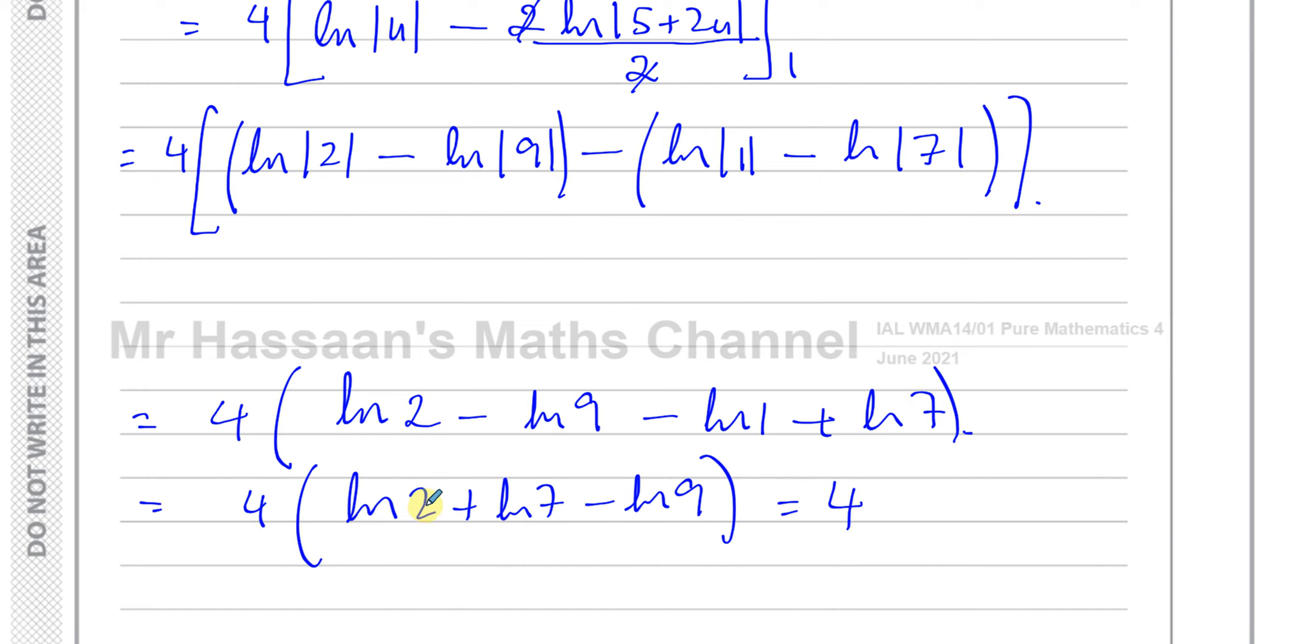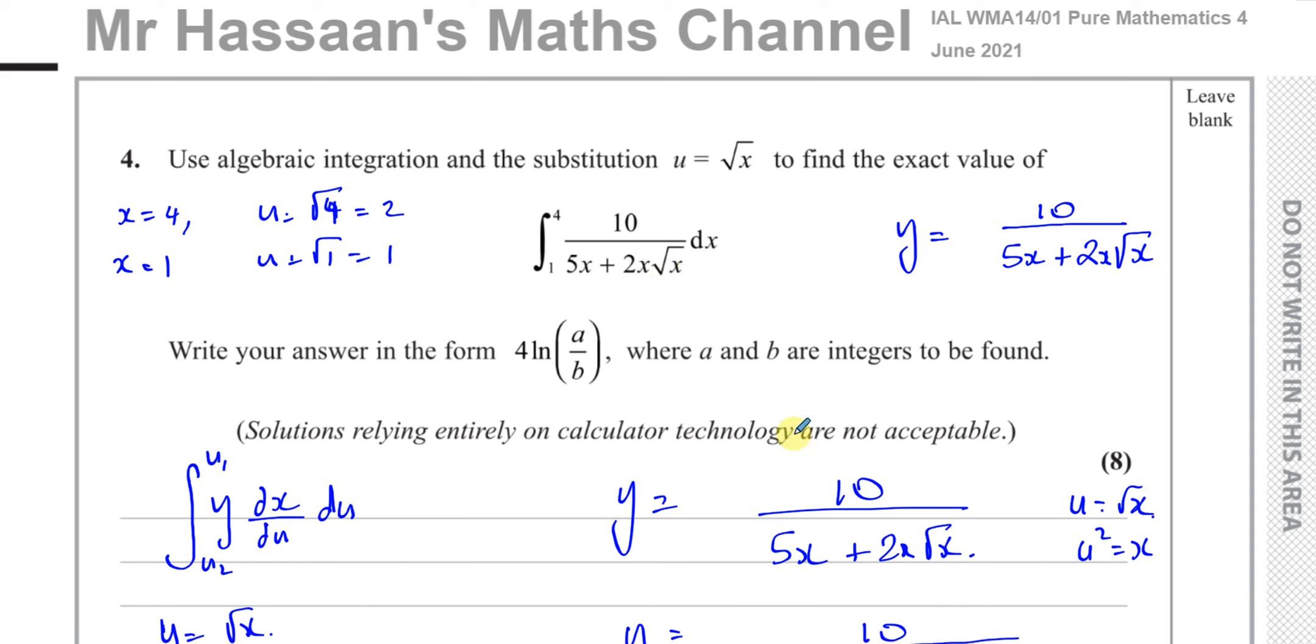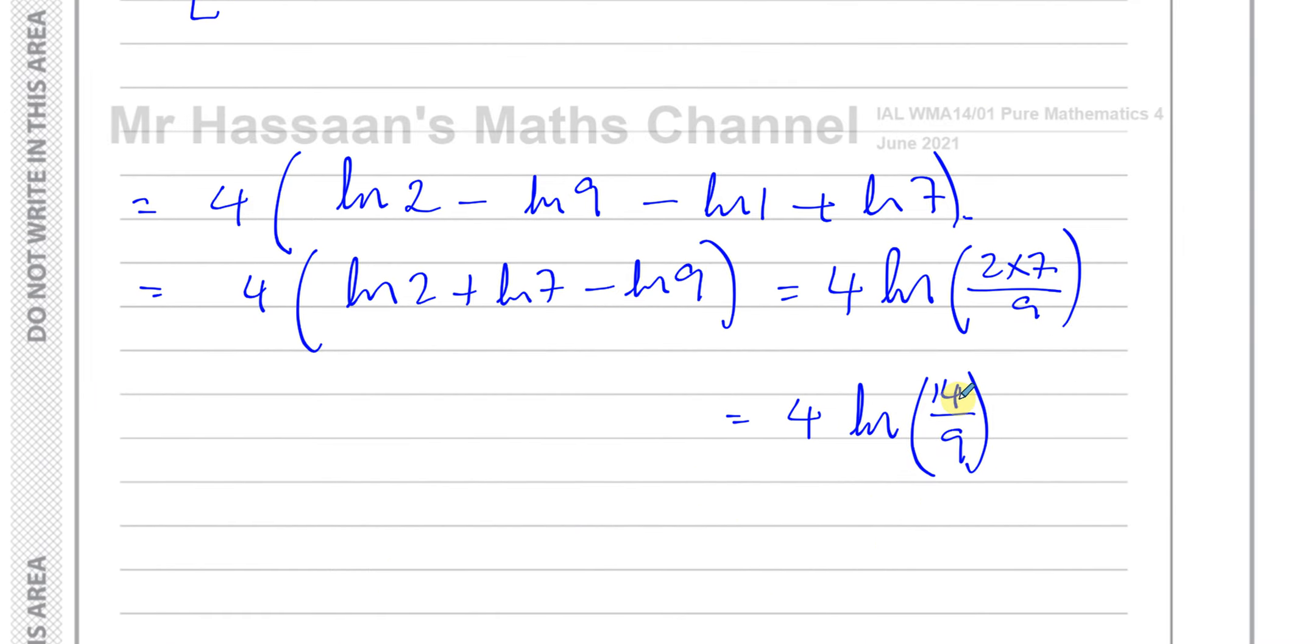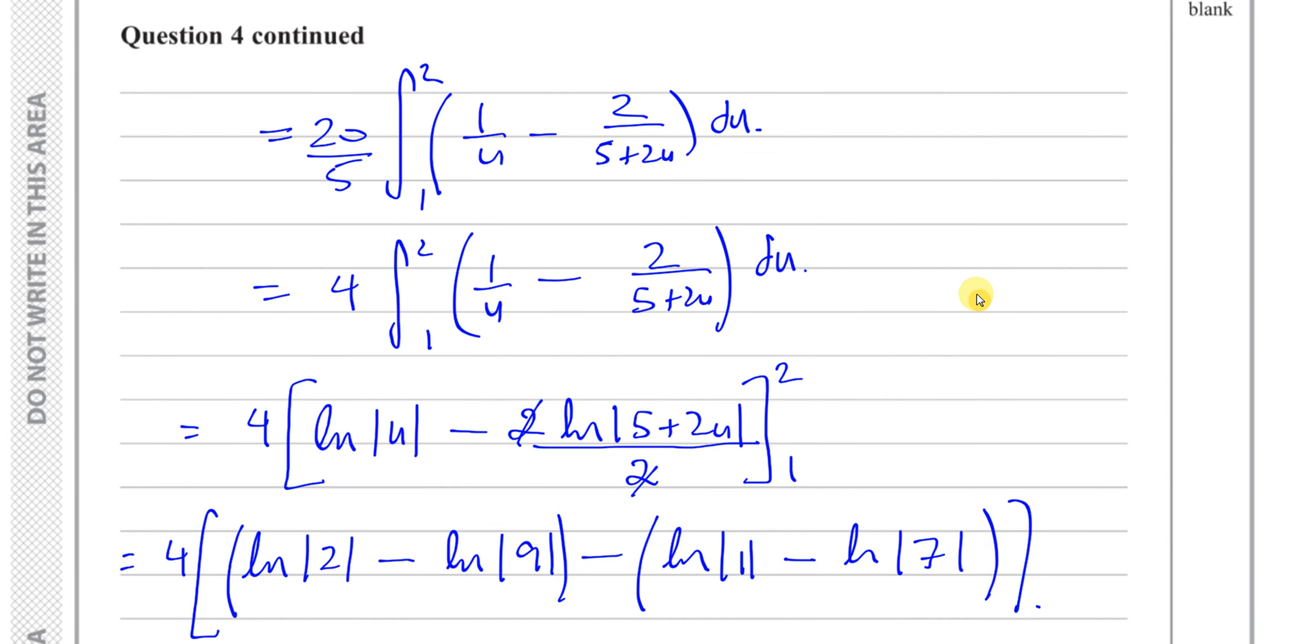Now I can use my law of logarithms where ln of something plus the ln of something is a product. And when you subtract, it's a quotient. So this is going to be the ln of 2 times 7 divided by 9. We're left with the answer as 4 times the ln of 14 over 9. I think that was the 4 times the ln of A over B, where A and B are integers to be found. So there's the answer to that question using substitution.